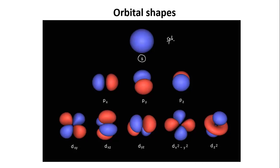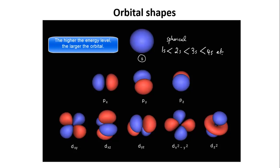So, all s orbitals are spherical. As you go from 1s to 2s to 3s and so on, for the energy levels that are further away from the nucleus, the size of the sphere increases, meaning the electron spends more time further away from the nucleus.